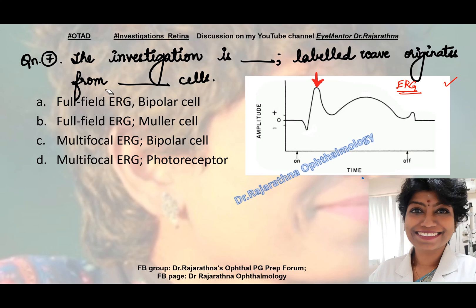This is full field. I have ruled out the two multifocal options. I pointed out to this wave — that is the second wave. This is the first wave, which is a negative wave — the A wave — and this is the B wave. The B wave originates from Muller cells and it represents the activity of bipolar cells. So that means the answer is B — Muller cells.